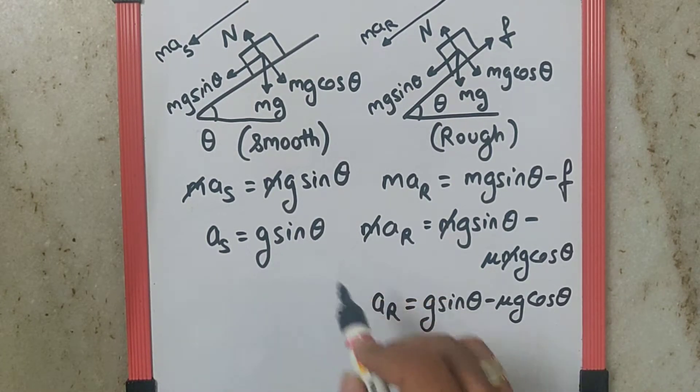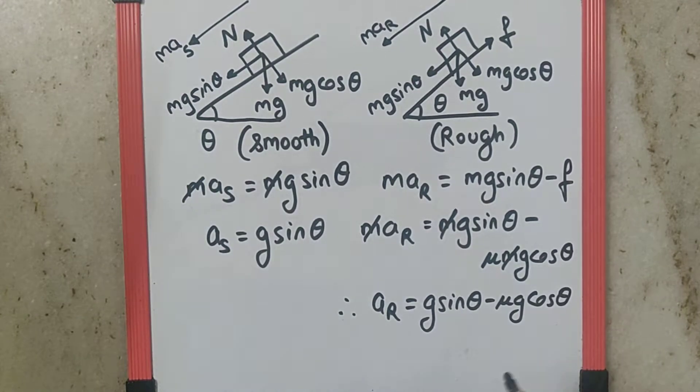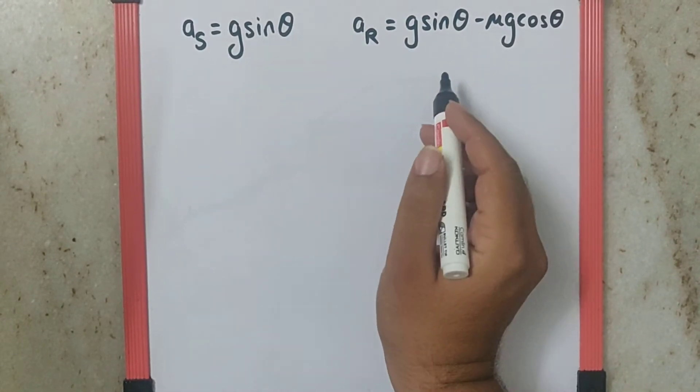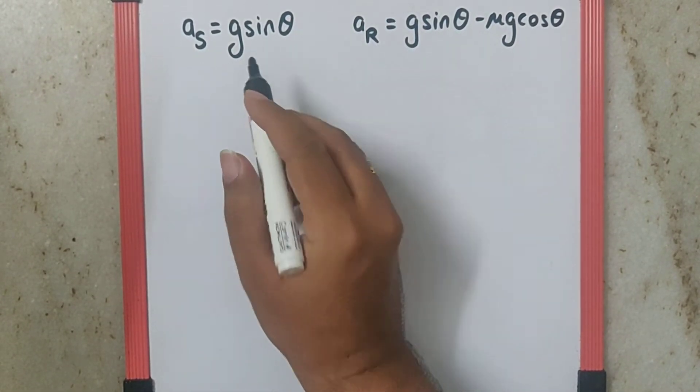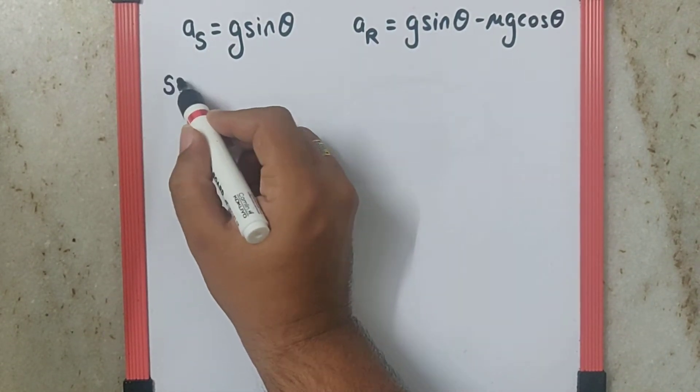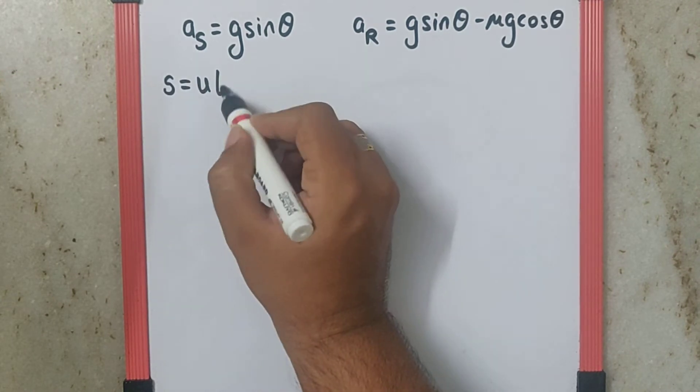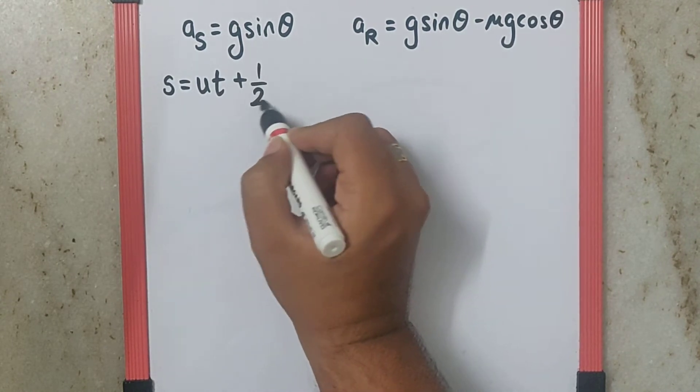Now we can take this as equation number one and equation number two and solve it further. We got the two equations over here. Now if we use the kinematical equation as s is equal to ut plus half at squared.